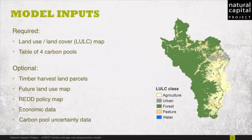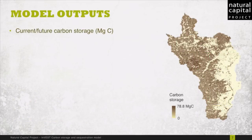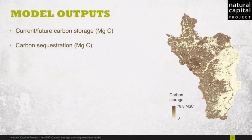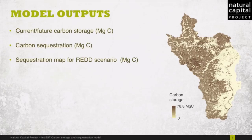Depending on which input data you provide, the model can produce different types of output. The most basic output is a carbon storage map, like the one pictured to the right, where values are given in megagrams of carbon. If a future land cover map is provided, carbon storage will be calculated for it, as well as sequestration between the current and future maps.